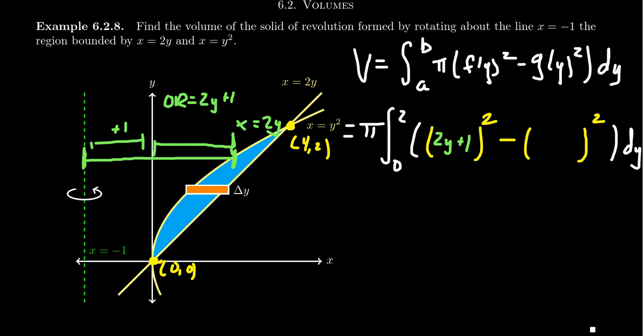Now, in general, whatever your axis is, you're just going to take your function minus the axis, and that's going to be the radius you're looking for. Notice 2y minus a negative 1 gives you a plus 1. So your outer radius is going to be 2y plus 1.